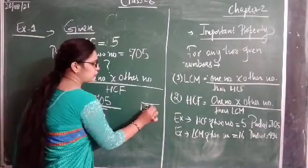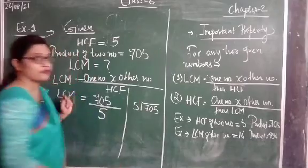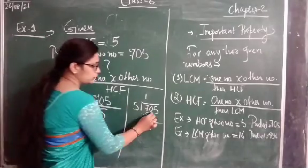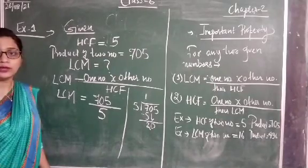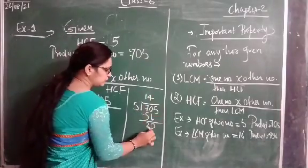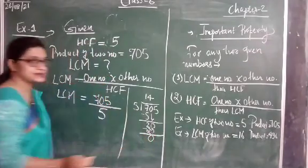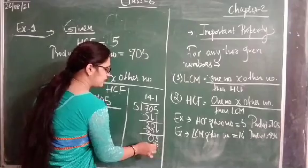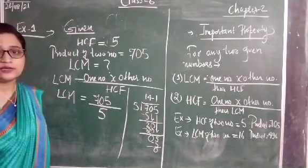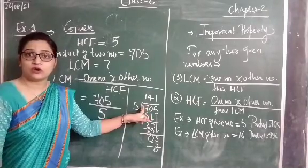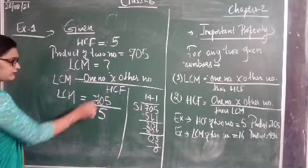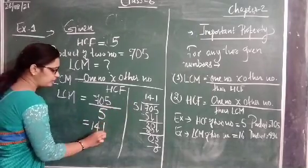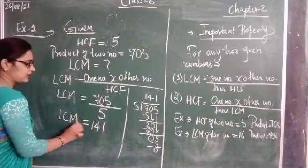Now we have to divide these numbers. 705 divided by 5. Working through the long division: 5 ones are 5, 7 minus 5 is 2, bring down 0 to get 20, 5 fours are 20, 20 minus 20 is 0, bring down 5, 5 ones are 5, 5 minus 5 is 0. So the result we get is 141.